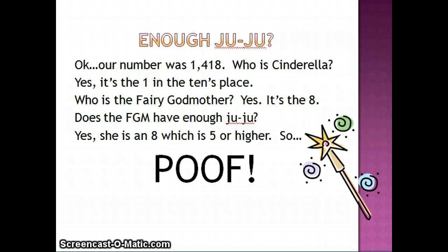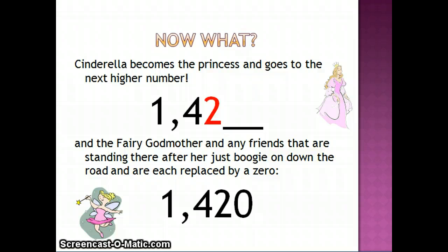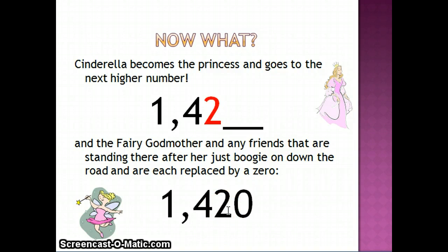Our number was one thousand four hundred eighteen. Who is Cinderella? It's the one in the tens place. Who is the fairy godmother? It's the eight. Does the fairy godmother have enough juju? Yes, she's an eight, which is five or higher, so poof! Cinderella becomes the princess and goes to the next higher number — you'll see the two is in red. Now the fairy godmother and any friends standing after her to her right just boogie on down the road and are each replaced by a zero because their job is done. So one thousand four hundred eighteen rounded to the nearest ten is one thousand four hundred and twenty.